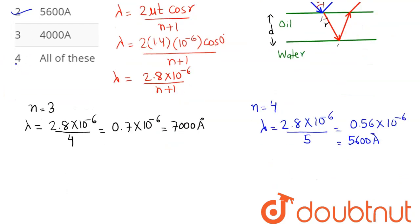Now for n equals 6, lambda comes out to be 2.8 × 10^-6 divided by 7. Hence this comes out as 0.4 × 10^-6, which is 4000 angstrom, so option 3 is also correct.